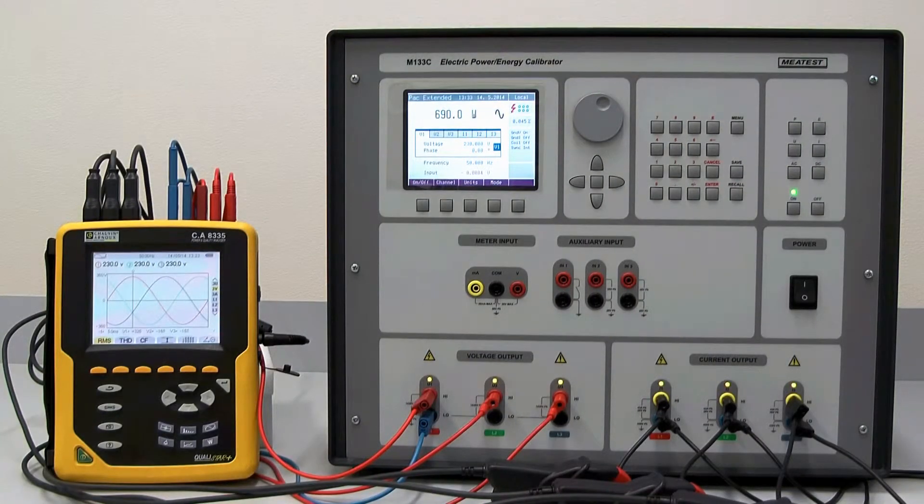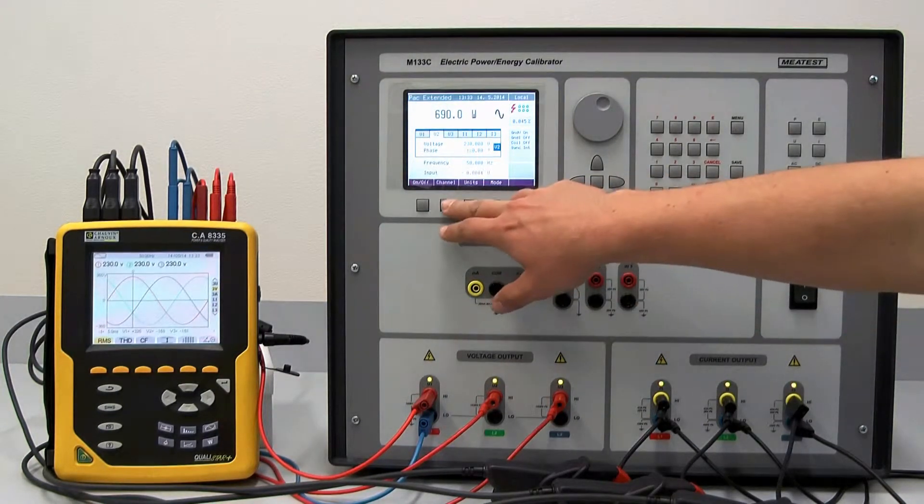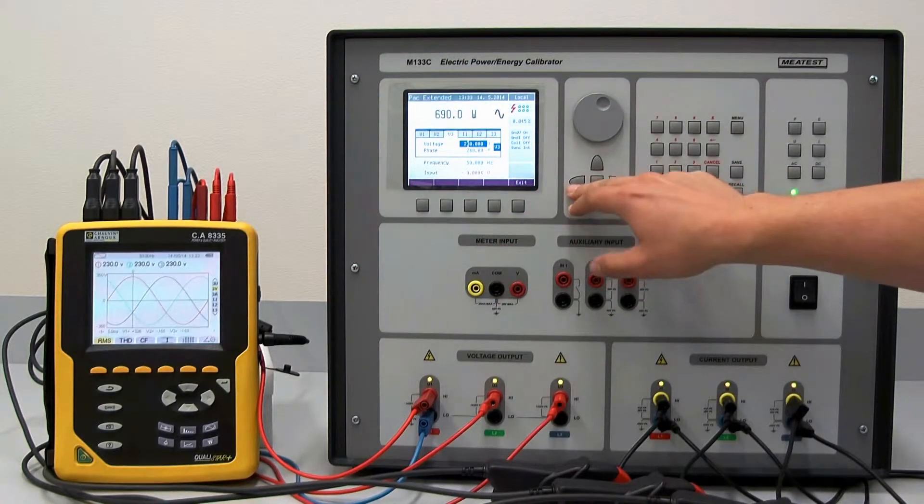In extended mode you can set amplitude and phase shift of both voltage and current independently on all three channels. Simply select a parameter and change it.